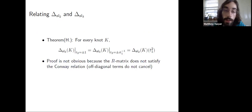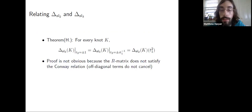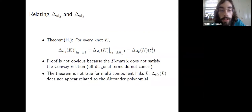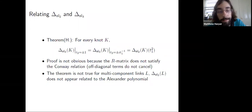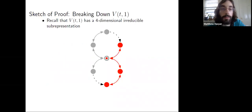This is not obvious because the R matrix doesn't satisfy the Conway relation. Even making the substitution T_2 equals one, the off-diagonal terms in the R matrix block decomposition don't satisfy the Conway relation — in fact those are independent of T. And again, this equality between the SL3 invariant and the Alexander polynomial under these substitutions is not true for multiple-component links; it doesn't appear related to the Alexander polynomial of a multi-component link under these substitutions.